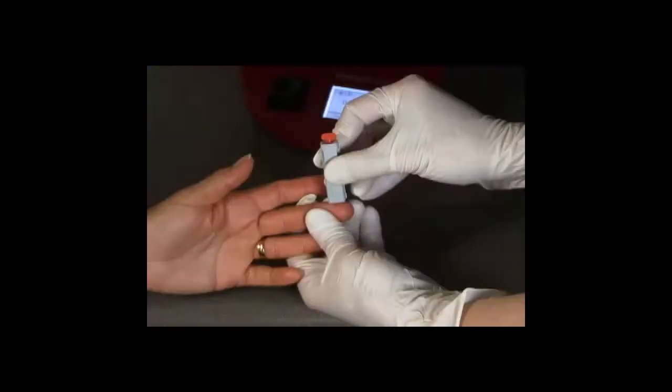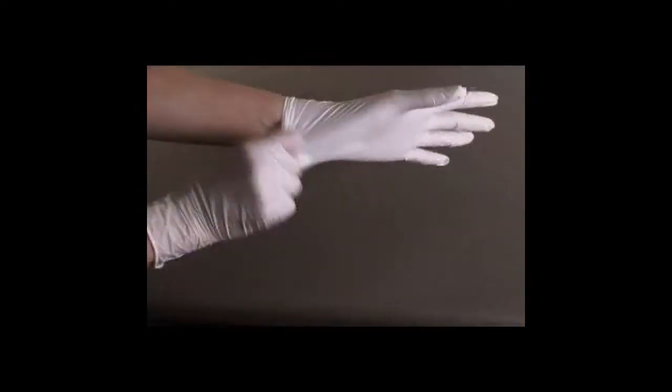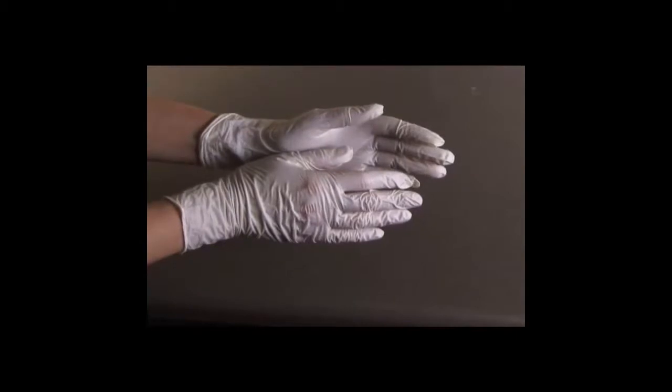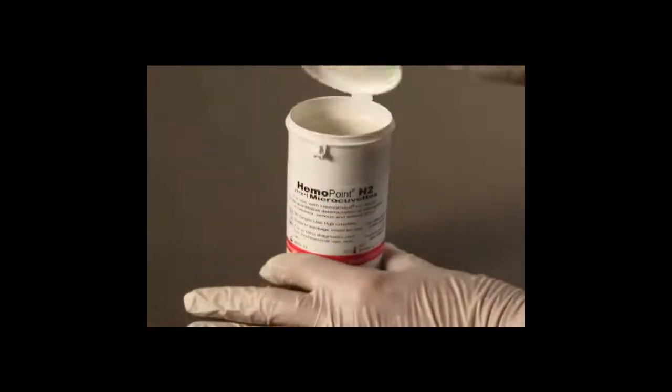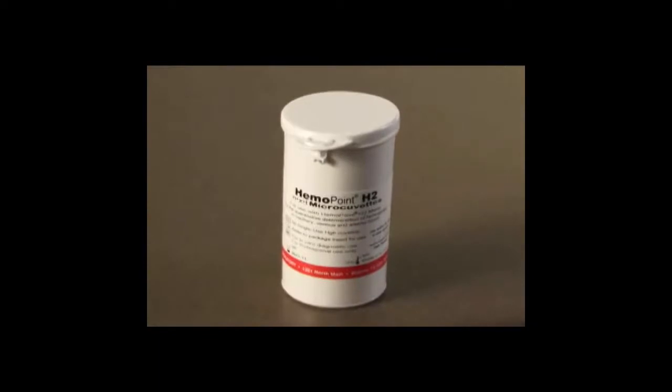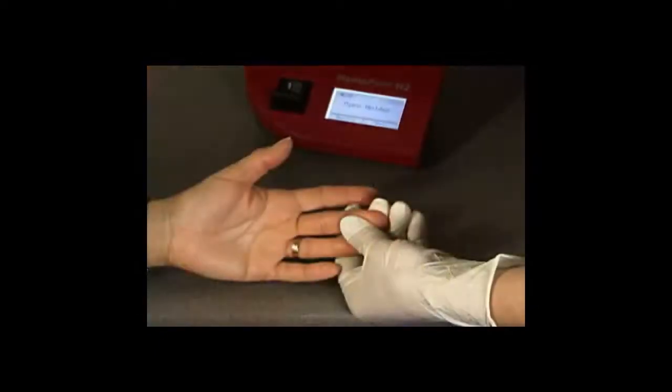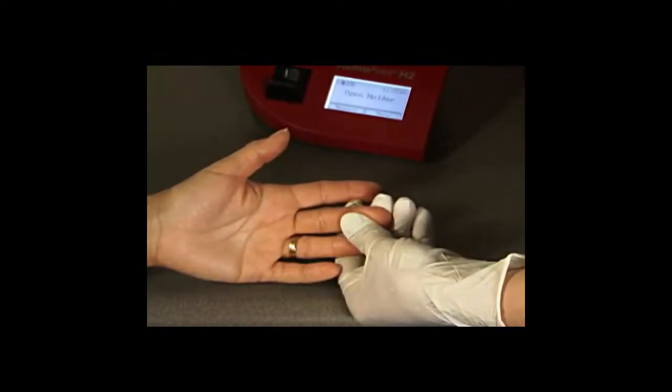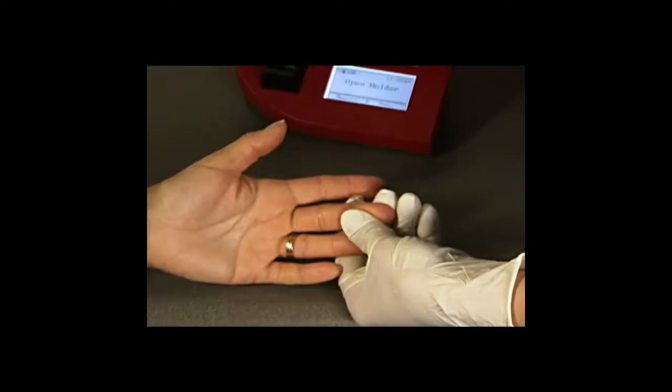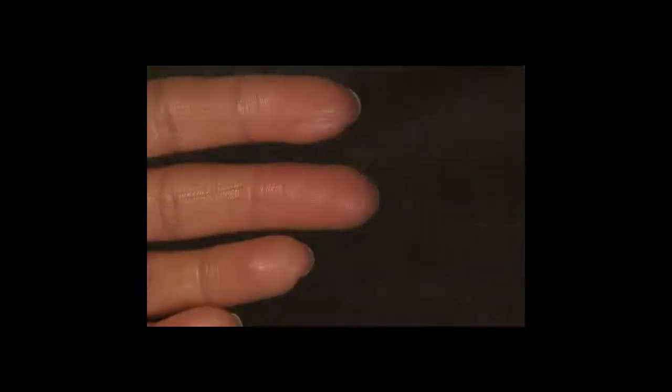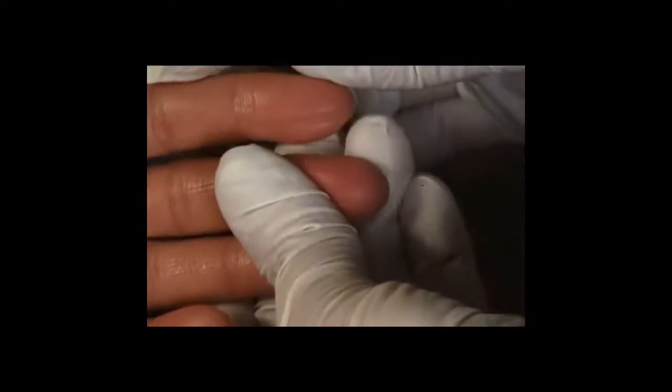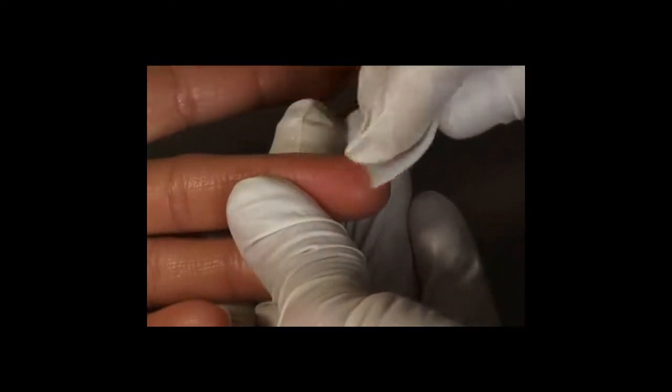We will now demonstrate how to take a sample of capillary blood. Remember to wear suitable protective gloves. Take out a micro-cuvette from the original container and immediately close the lid. Make sure that your patient is sitting comfortably. There should be good blood circulation in the hand from which you wish to take blood. The hand should be warm and relaxed. If not, it can be warmed in warm water. Lightly massage the fingers to stimulate the circulation. Only use the middle or ring finger. The patient should not be wearing a ring on the finger used for sampling. Now, disinfect the puncture site and allow it to dry.